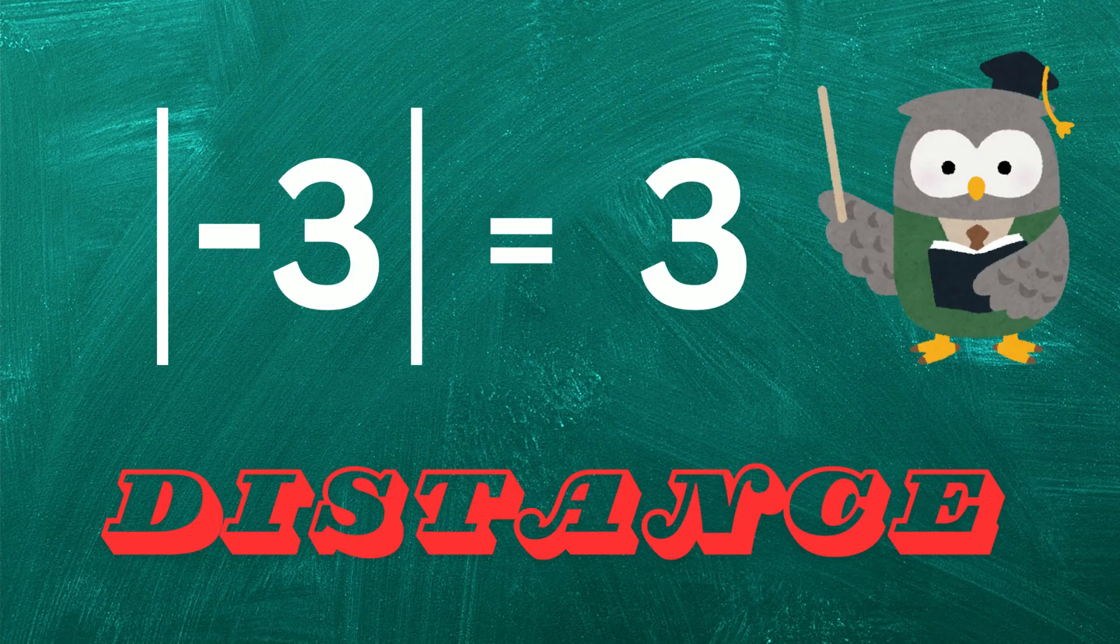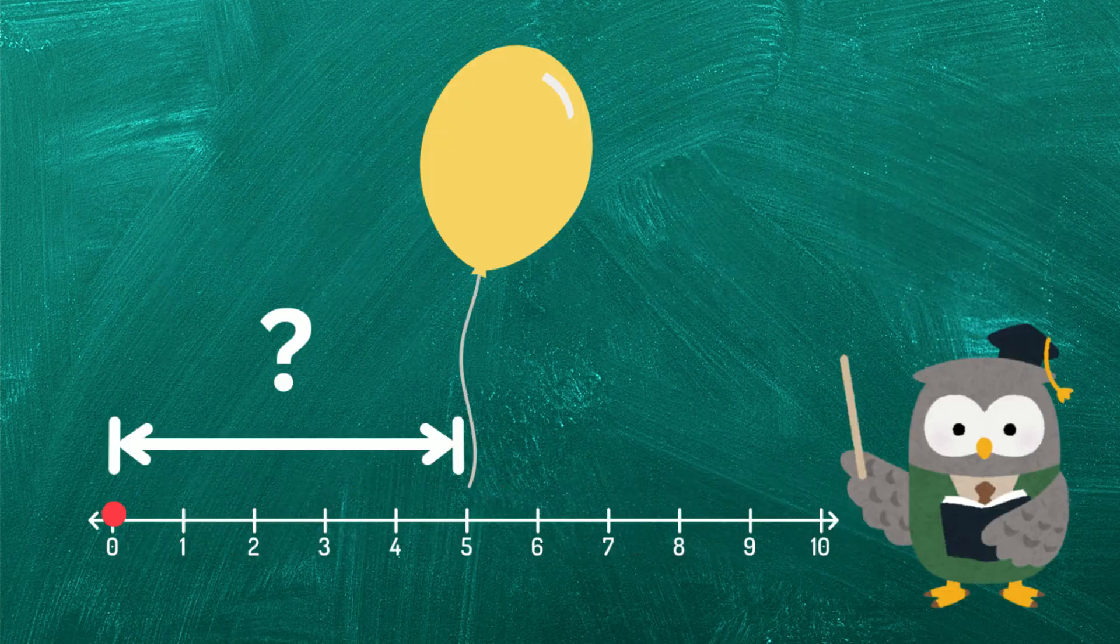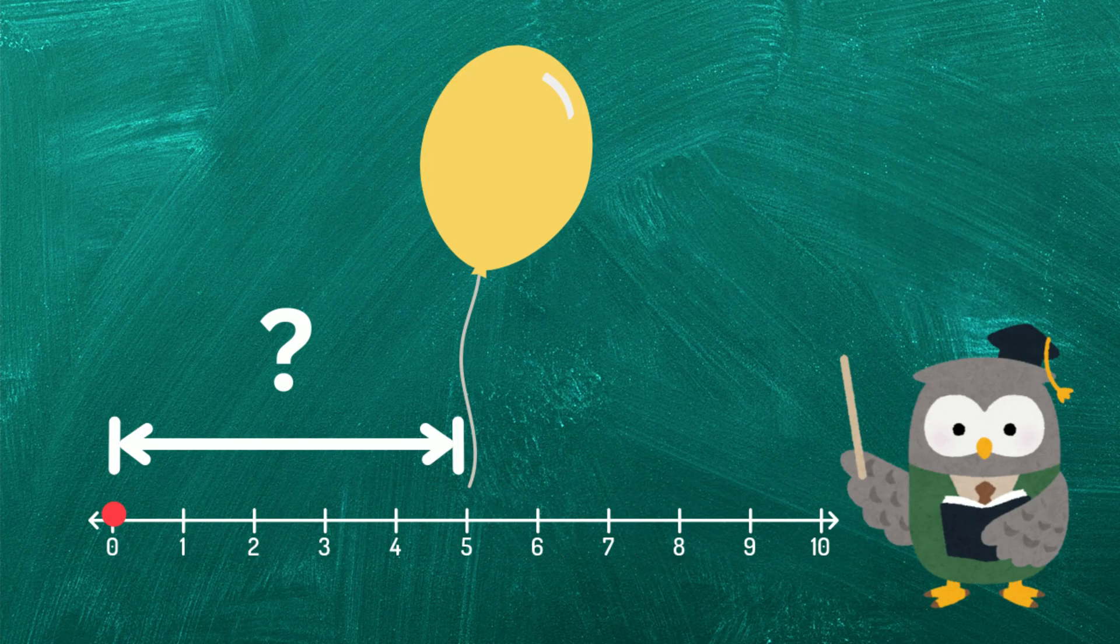Now imagine this balloon floating at 5. How far is it from our special point? That's right, its absolute value is also 5 because it's 5 units away from our special point.